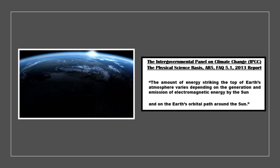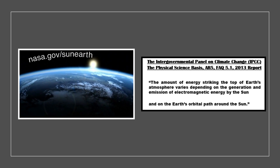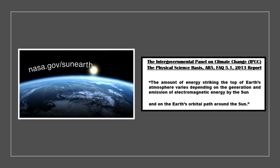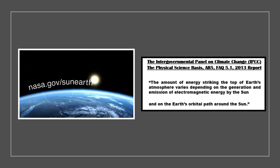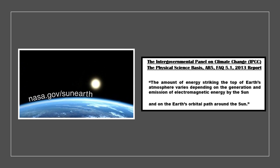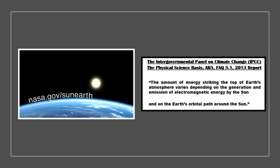Some of the energy produced by nuclear fusion in the Sun's interior will eventually strike the top of the Earth's atmosphere. The amount of energy that does strike the atmosphere depends on two main factors: the total amount of energy produced and transmitted by the Sun, and the orbital cycles of the Earth with respect to the Sun.